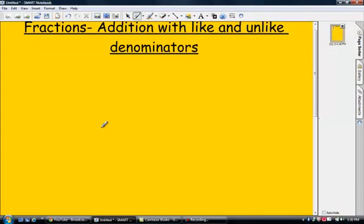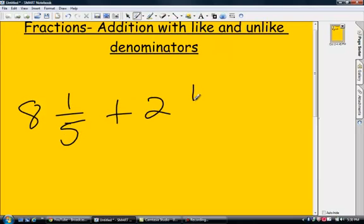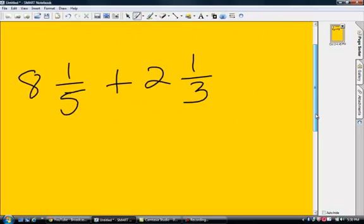Let's do some mixed fractions with unlike denominators: 8 and 1/5 plus 2 and 1/3.